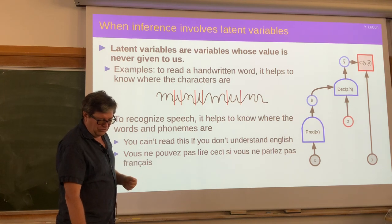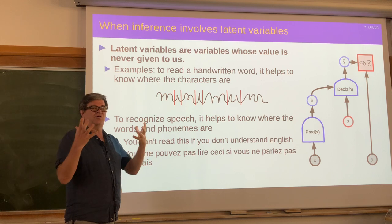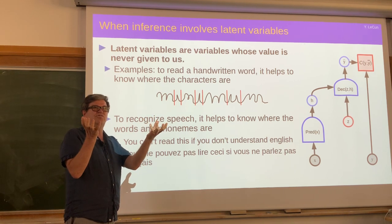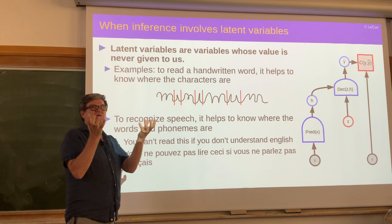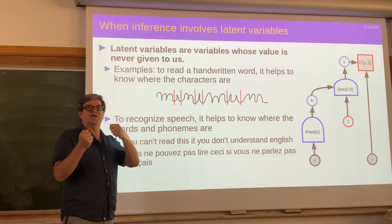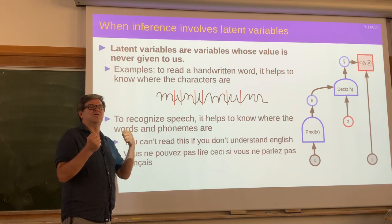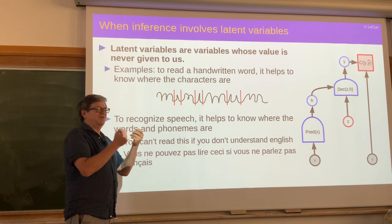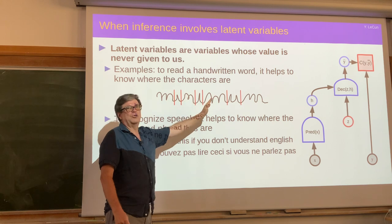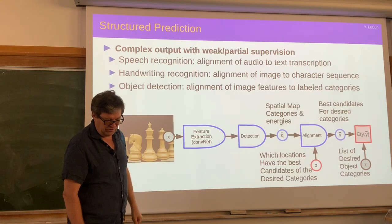That's the idea of structure prediction. You have a cost function — an energy function — on the interpretation, and you have to find an interpretation that minimizes this energy function. It might include minimization over a latent variable, which in this case would be where you put the boundaries between the characters. The same applies in speech recognition.